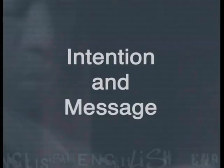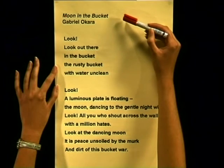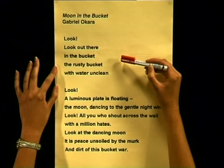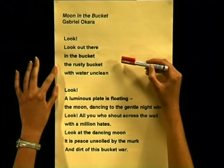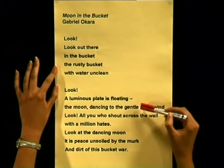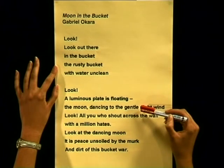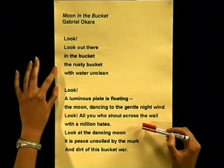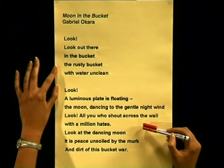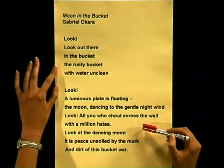Protest poetry will show you a style of poetry which deals directly with the emotions of poets. As we go through the poems in this lesson, we are going to focus on the intention and message. Here is our first poem, Moon in the Bucket by Gabriel Okara. Look, look out there in the bucket, the rusty bucket, with water unclean. Look, a luminous plate is floating, the moon, dancing to the gentle night wind. Look, all you who shout across the wall with a million heights. Look at the dancing moon. It is peace unsoiled by the murk and dirt of this bucket wall.